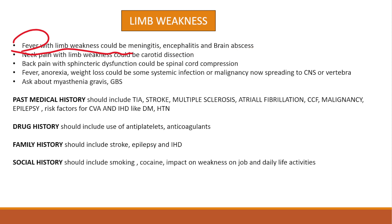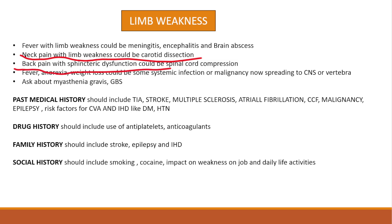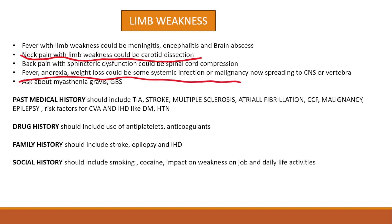If the patient has neck pain with limb weakness, it could be carotid dissection. If the patient has back pain with sphincteric dysfunction, it could be spinal cord compression. If the patient has fever, anorexia, and weight loss, it could be a systemic infection or malignancy spreading to the CNS, spinal cord, or vertebrae, thereby causing limb weakness.